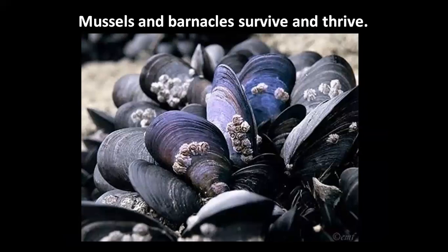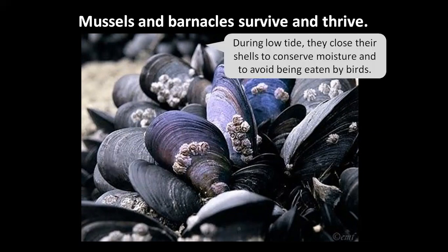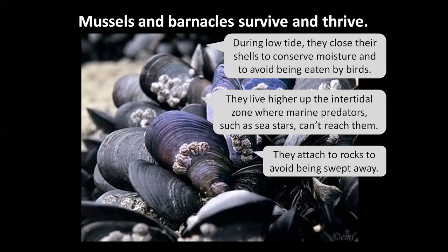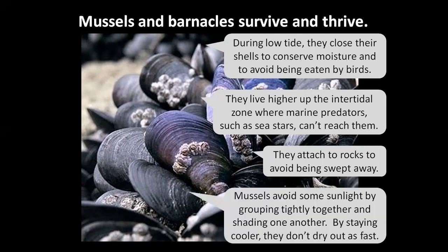Mussels and barnacles survive and thrive. During low tide they close their shells to conserve moisture and to avoid being eaten by birds. They live higher up in the intertidal zone where marine predators such as sea stars can't reach them. They attach to rocks to avoid being swept away. Mussels avoid sunlight by grouping tightly together and shading one another, so by staying cooler they don't dry out as fast.